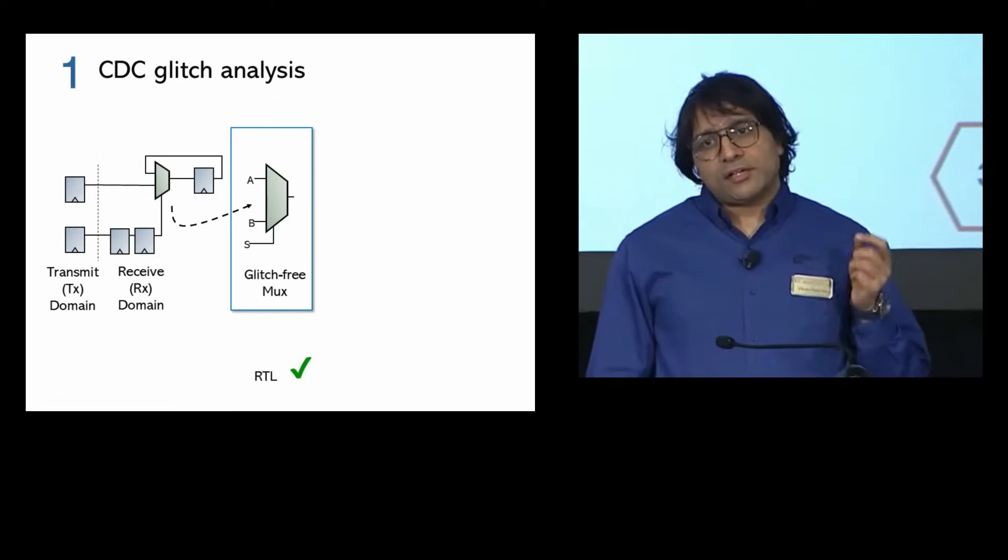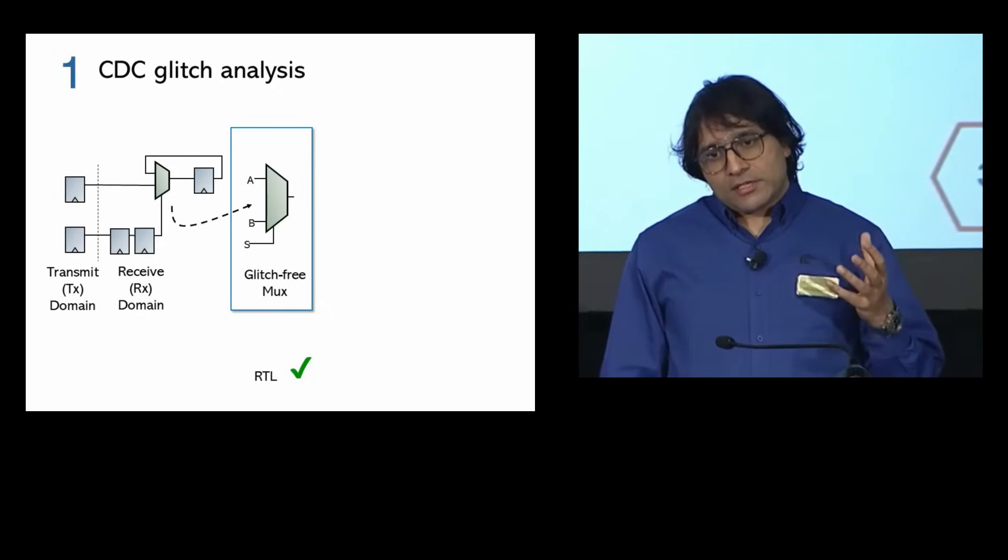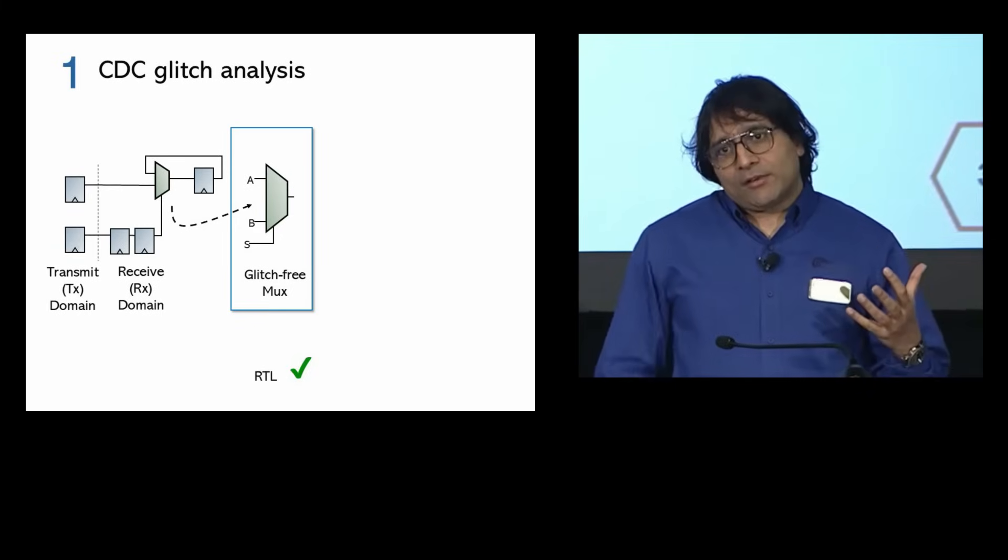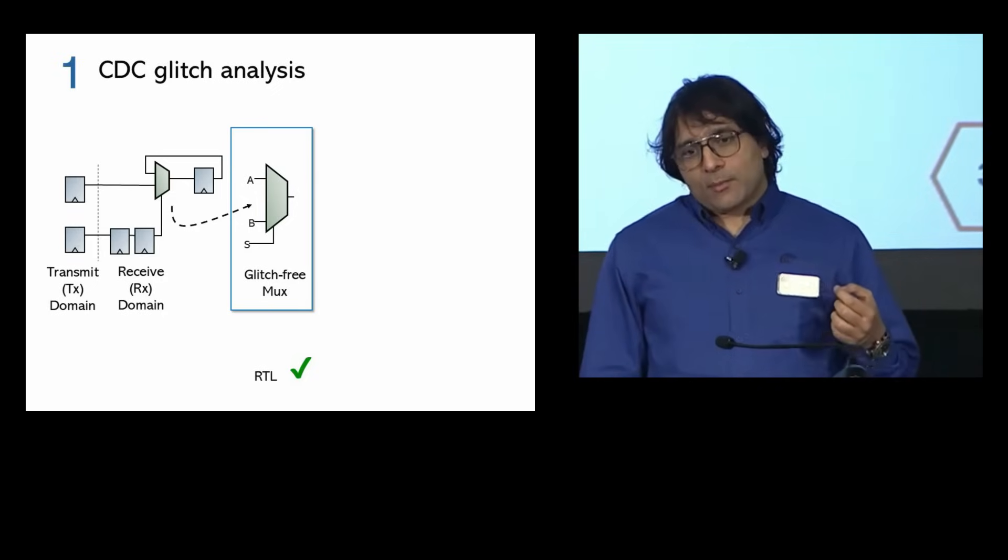The first one is glitch analysis. Recently we have seen a lot of cases where RTL level sign-off is complete, but at gate level you can start seeing glitch issues because synthesis or optimization tools might have optimized differently, and this has become a major challenge.